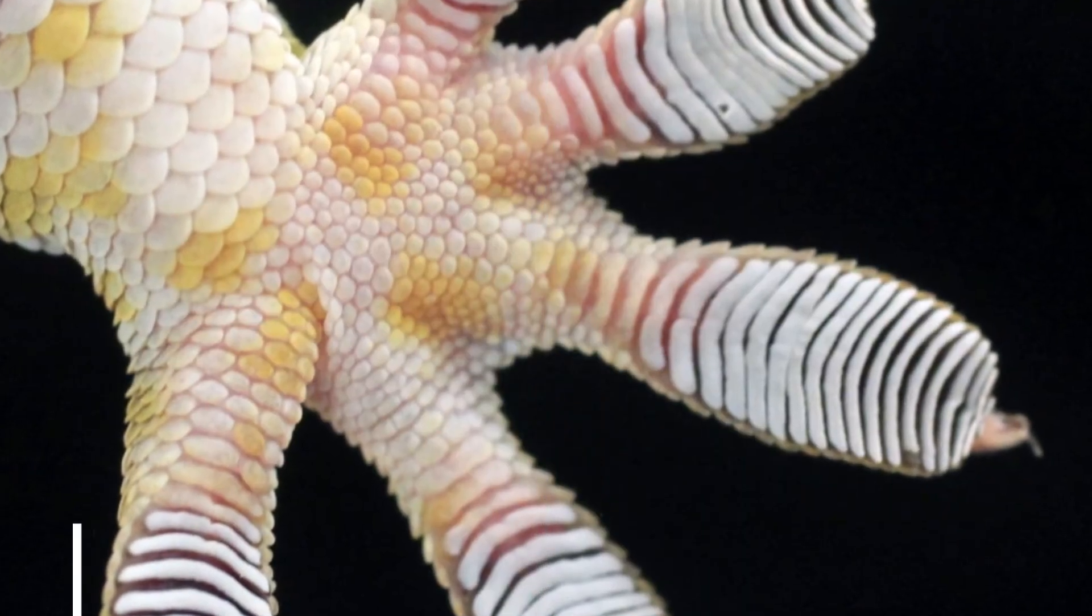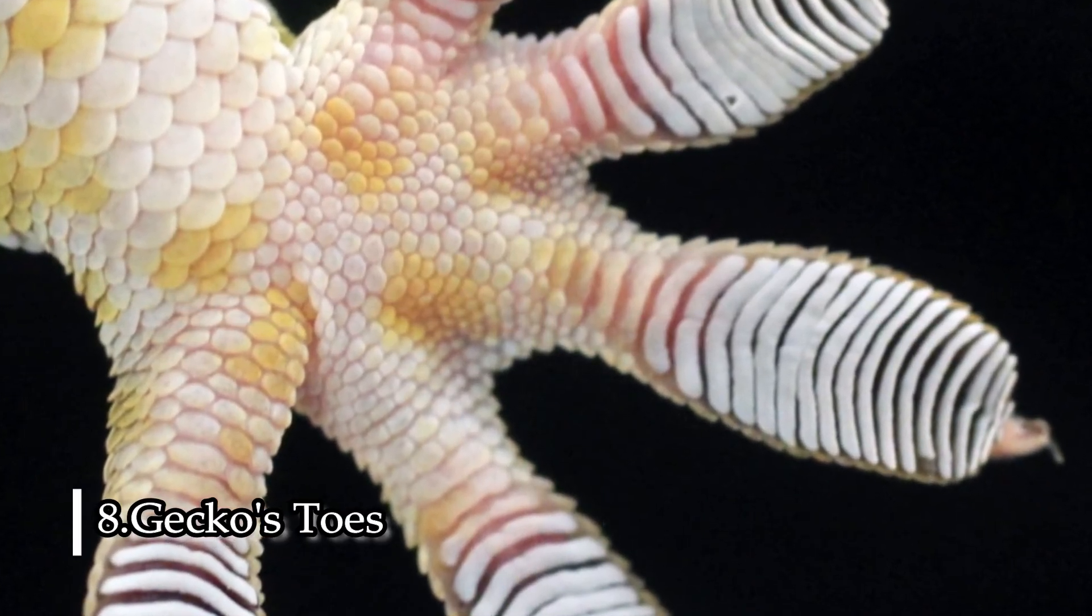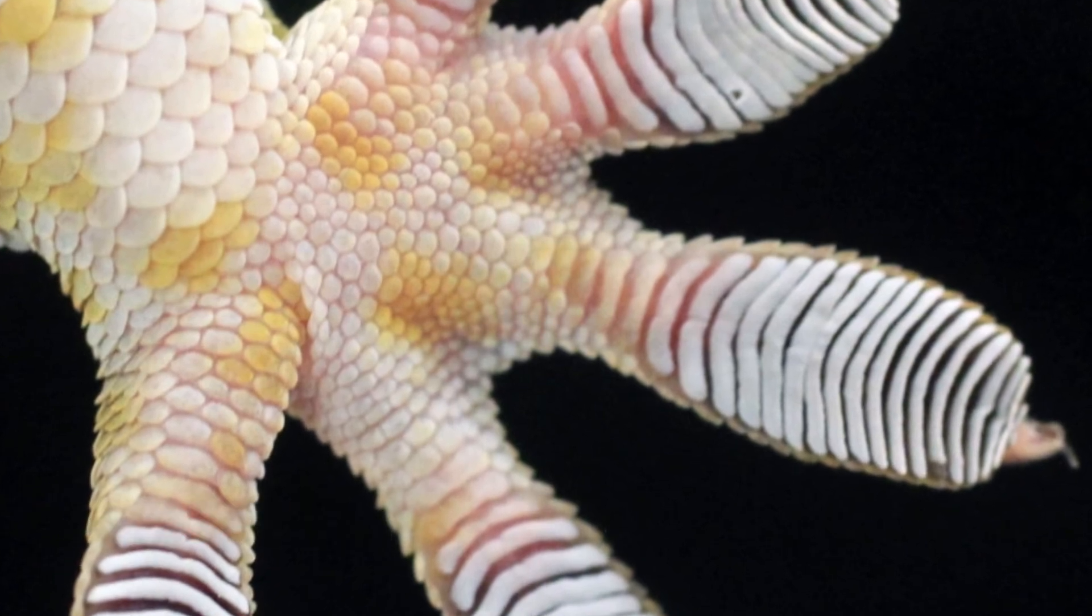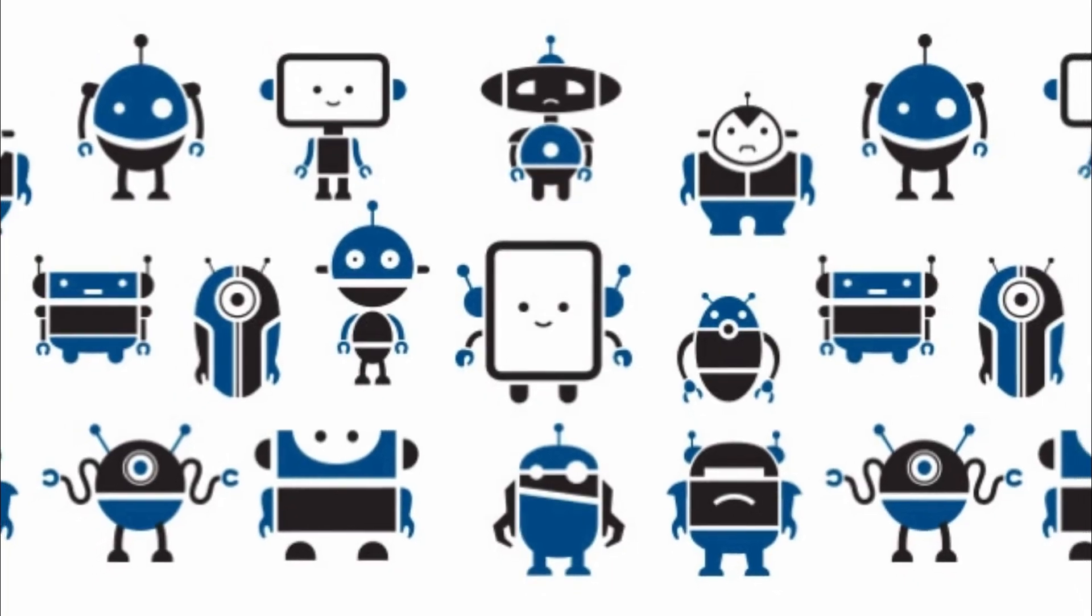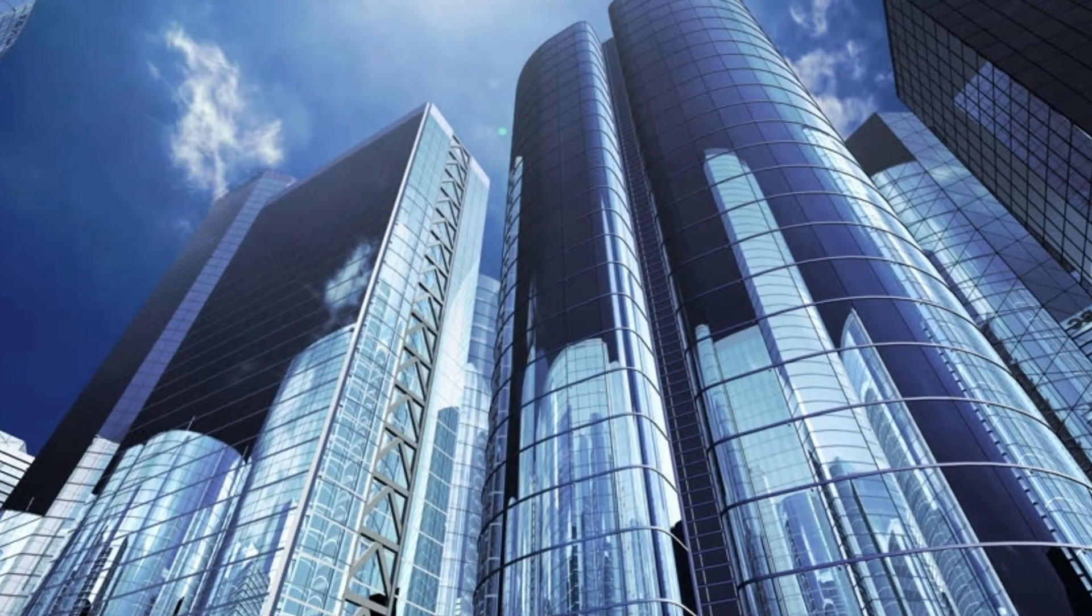Gecko stores have nano-sized hairs that fuse them to smooth surfaces. Scientists hope to use this ability to create search and rescue robots that can scale on smoother buildings.